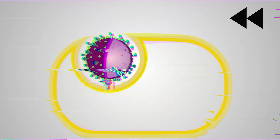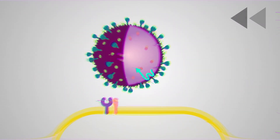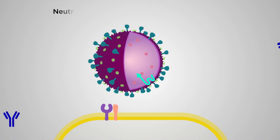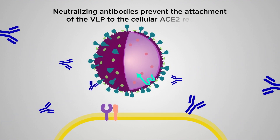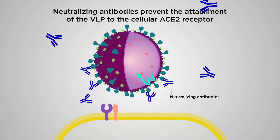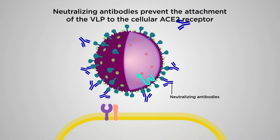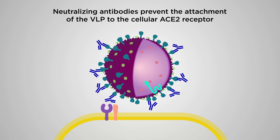When neutralizing antibodies are present, they block the spike proteins, preventing the VLPs from attaching to the ACE2 receptors.